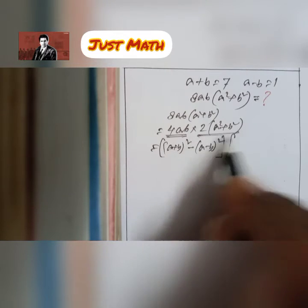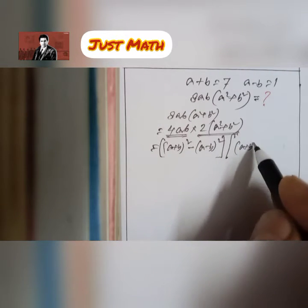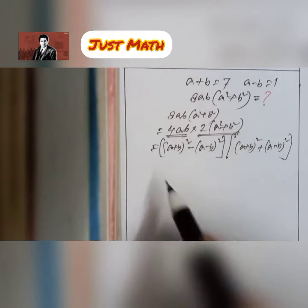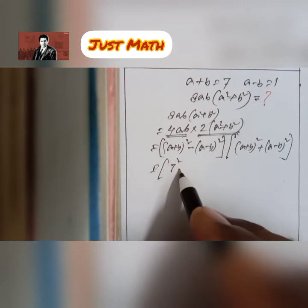And the formula of 2 into a square plus b square is a plus b whole square plus a minus b whole square. Now a plus b is 7.